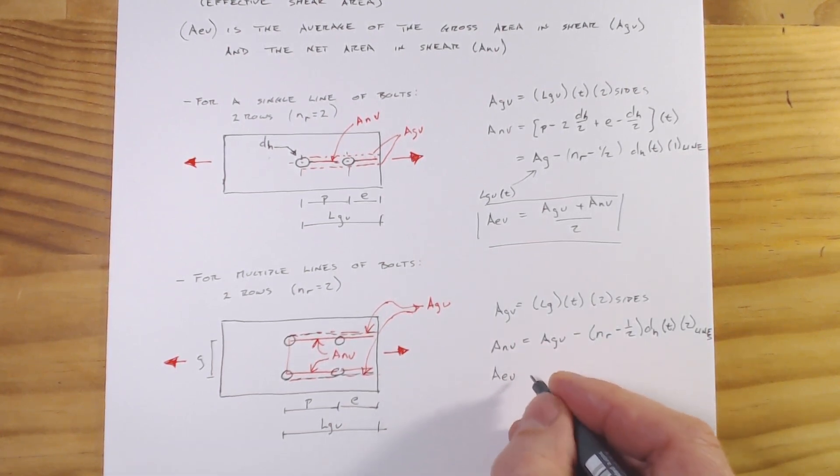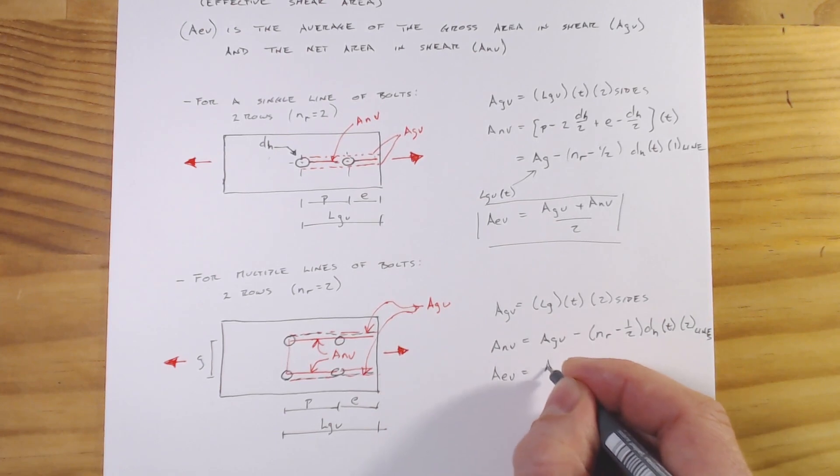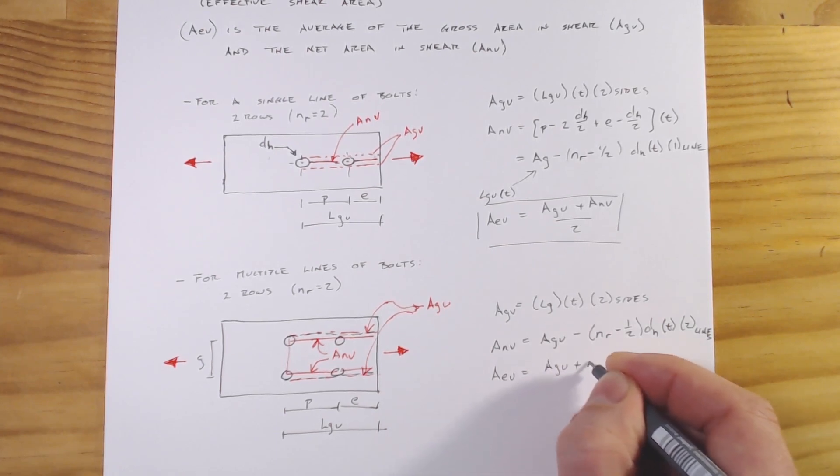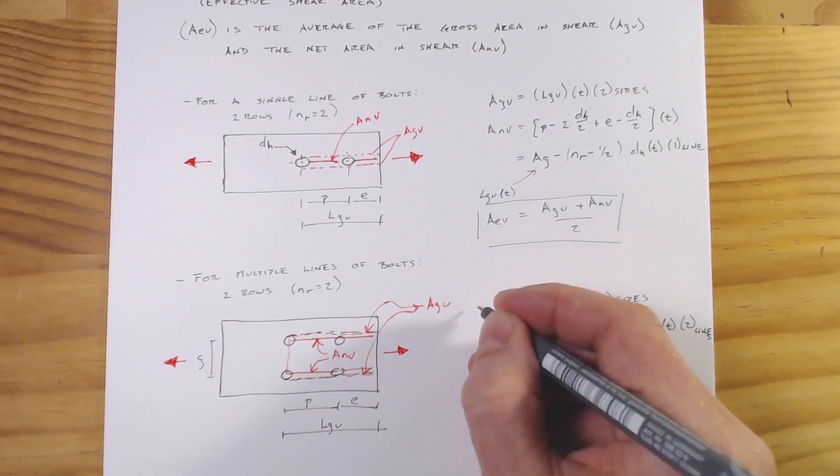And of course our effective area is going to be A_GV plus A_NV over two.